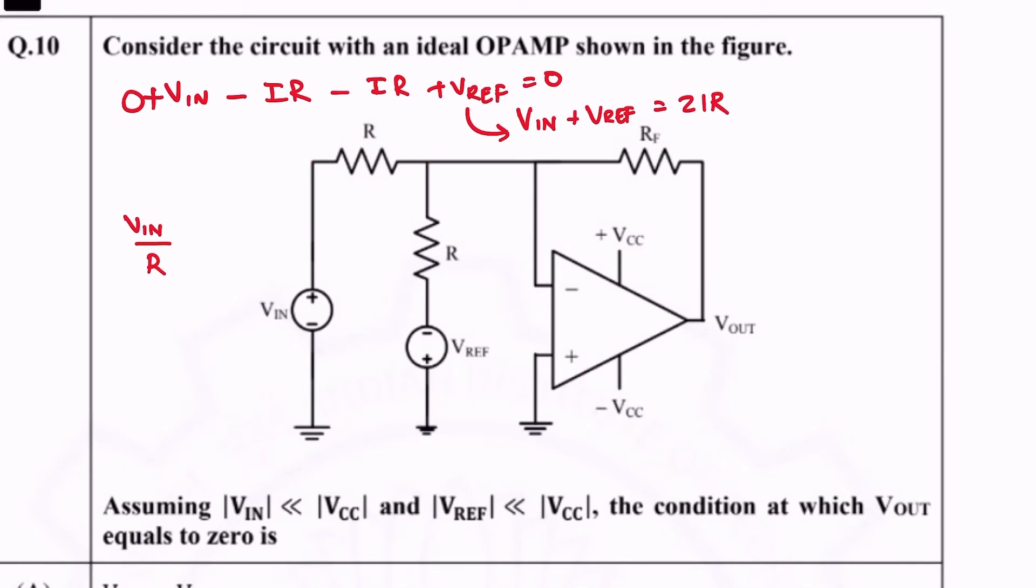So substituting that I is equal to Vin by R, you will get that Vin plus Vref is equal to 2 times Vin by R times R, so that's 2 times Vin. That means the condition is Vref is equal to Vin.